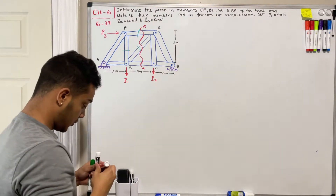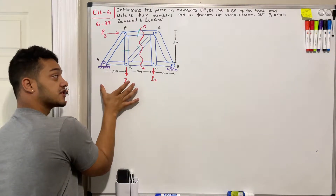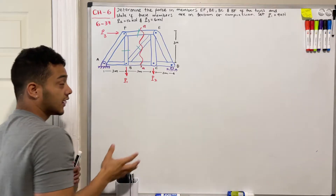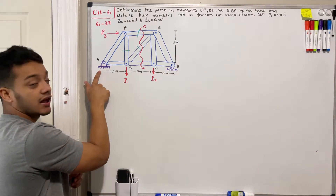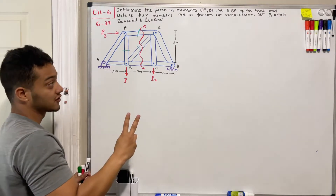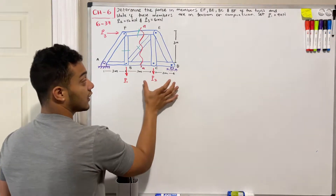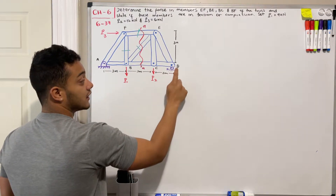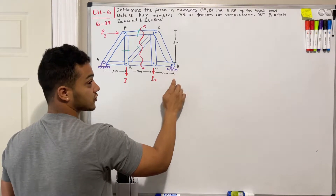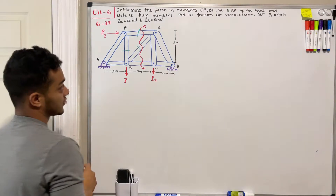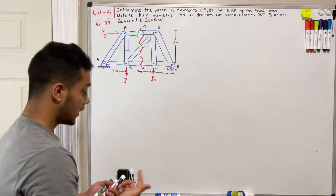In order to know the forces at these sections, I either have to pick the left side or the right side. On the left side I have a pin connection at A, which means two reaction forces — two unknowns. On the right side I have a roller at D, which means one reaction force unknown in the Y direction. So I'm going to take the right side because it has one fewer unknown.